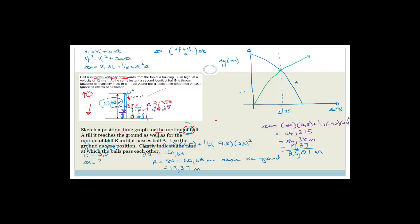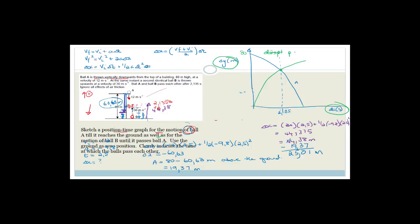The key points to show are: ball A comes from position 80 meters and drops, with the gradient getting steeper due to acceleration; ball B goes from position 0 with the gradient slowing down. Draw this neatly with a ruler for the axes. Label the x and y axes, and always include a heading — 'Position versus Time Graph.'